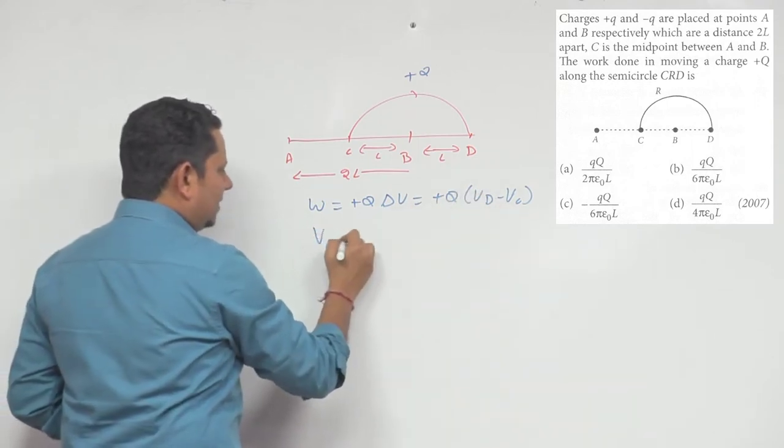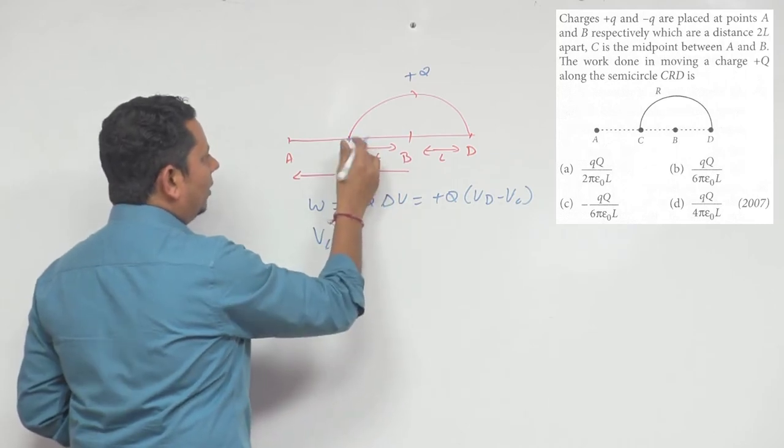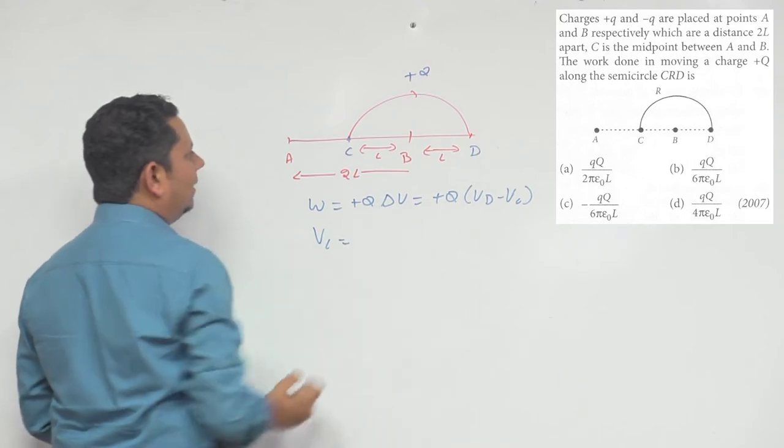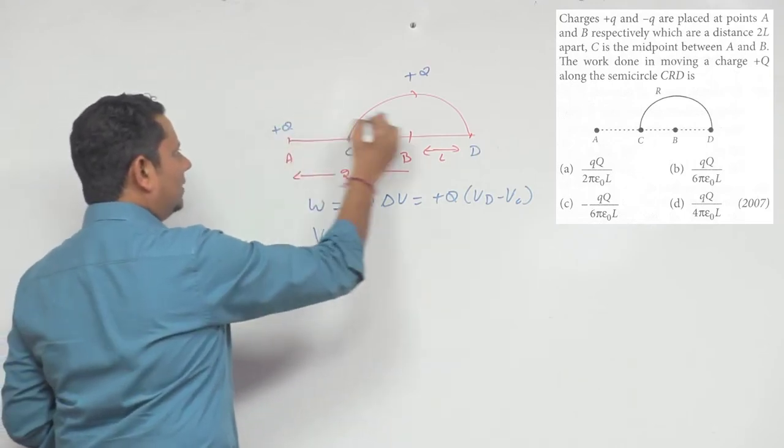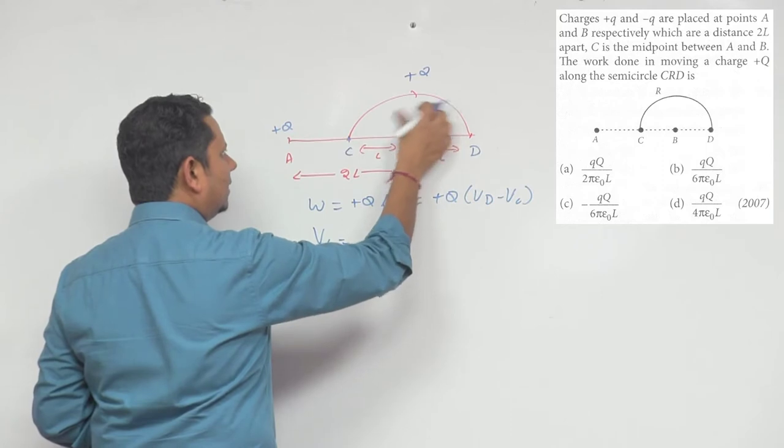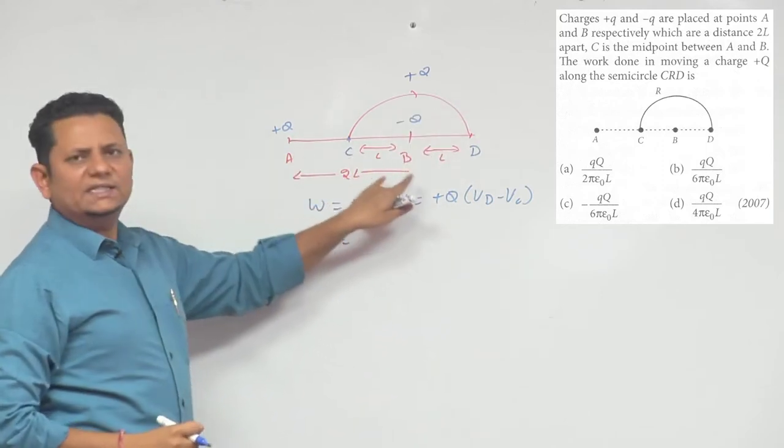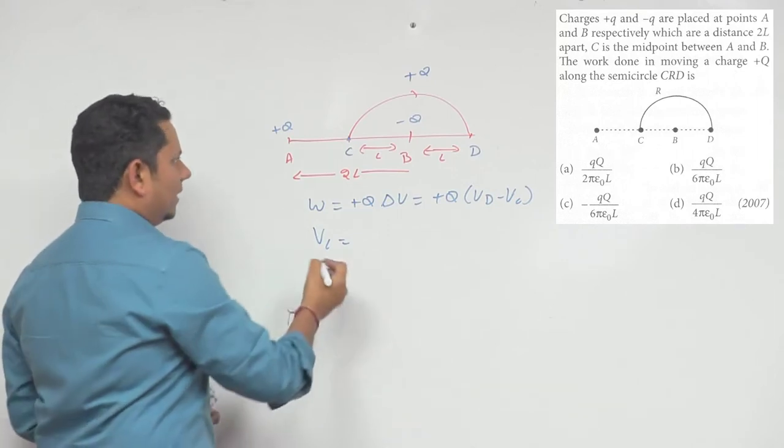Now if we first calculate the value of VC, at the point C here, what will be the potential? At this point, because you have +Q charge here and -Q charge here, the potential will be zero because both distances are equal.